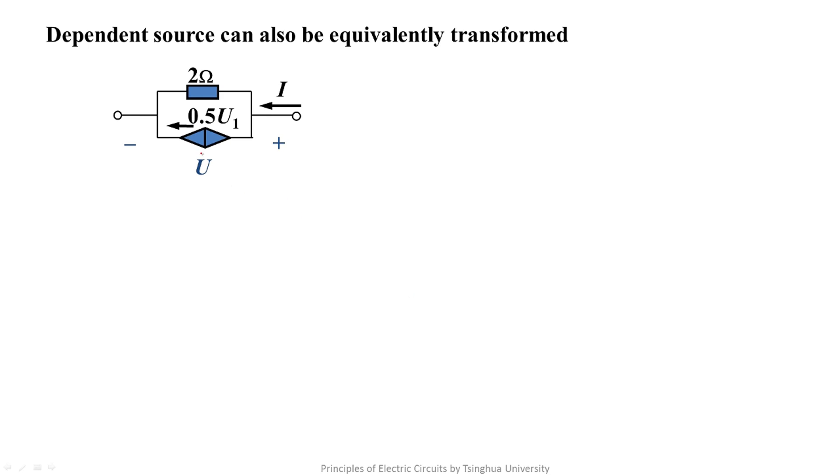For the voltage-controlled current source, its controlling variable U1 is not in this sub-circuit, but in other parts of the circuit. About this sub-circuit, we can write a KCL equation: I equals 0.5U1 plus 0.5U.